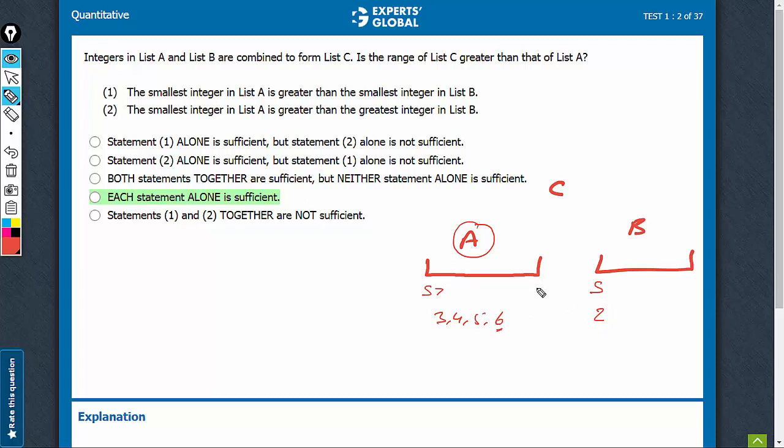And if the greatest, I'm imagining this case that 3 was the smallest number and 6 is the biggest number. And here, 2 is the smallest number. So even if the greatest number is smaller here, the range would be 2 to 6, it would be greater for list C. And if the greatest number here is something bigger, say if it is something like 7, still the range is much bigger 2 to 7 compared to what is the range of A. So definitely we are getting yes as an answer using statement 1. And therefore statement 1 is sufficient.